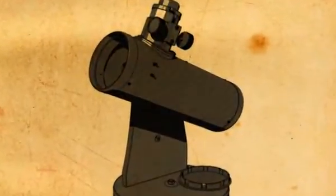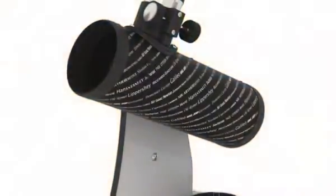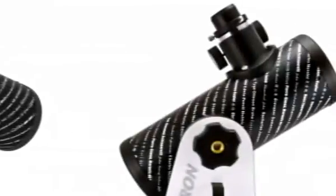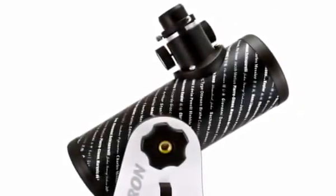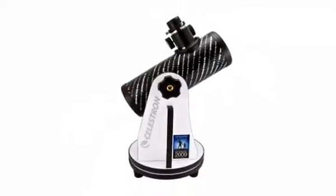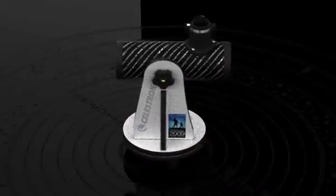True to its name, First Scope is an ultimate beginner telescope. It is extremely easy to observe with. The user simply navigates the night sky by moving the optical tube in the direction of the desired object, making the viewing experience a snap.